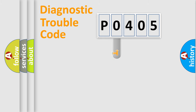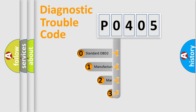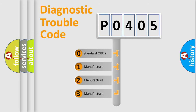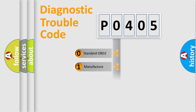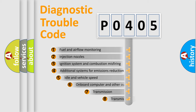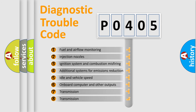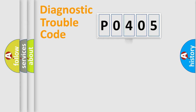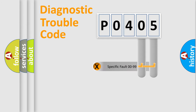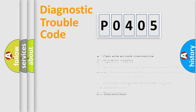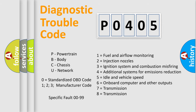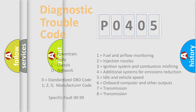This distribution is defined in the first character of the code. If the second character is expressed as 0, it is a standardized error. In the case of numbers 1, 2, or 3, it is a more specific expression of a car-specific error. The third character specifies a subset of errors. This division is valid only for the standardized DTC code, where the last two characters define the specific fault of the group.